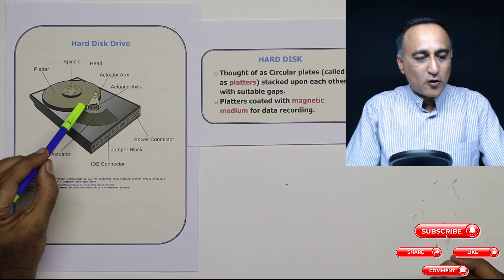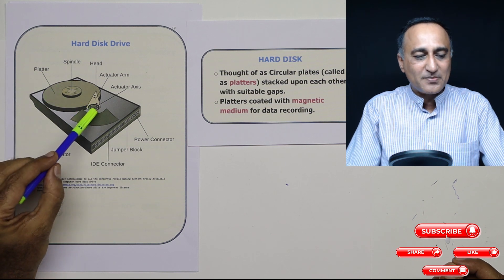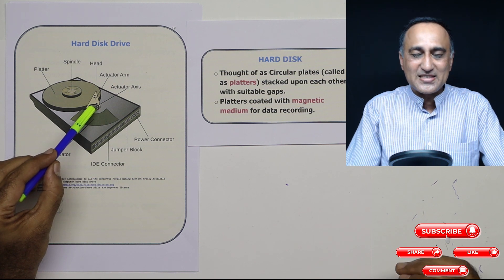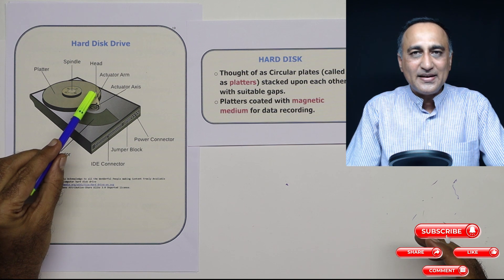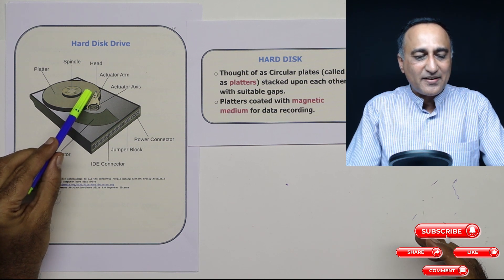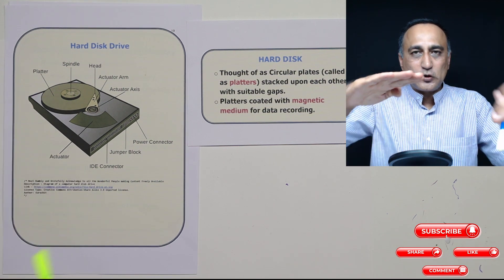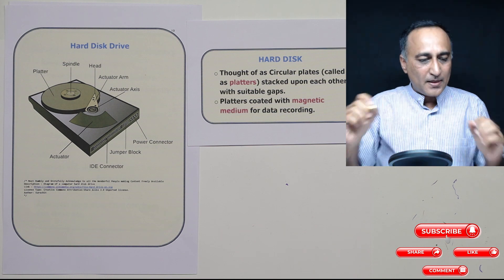Then, in order to read and write data from these particular plates, you have something called the read-write head. The read-write head has an actuator axis which will be clear in the next diagram. At the end, it's got a head. The head is used to read and write data from this hard disk. The head is on both the top part of the plate as well as the bottom part of the plate.